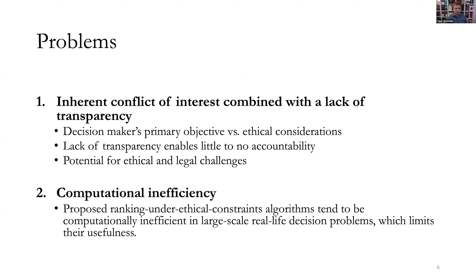Motivated by these two examples, we can identify two problems that exist right now. First, there is an inherent conflict of interest between the decision maker's primary objective and ethical considerations, and when there is a lack of transparency, it enables little to no accountability, creating potential for legal and ethical challenges. Second, existing algorithms proposed for solving such problems tend to be computationally inefficient, and if you want to deploy them at the scale of Netflix or TikTok — where rankings must be provided very fast in real time — their usefulness is limited.